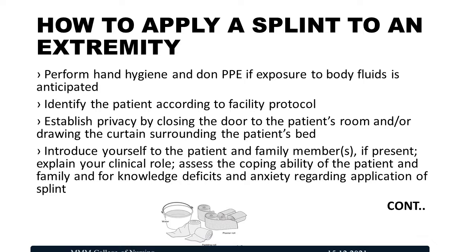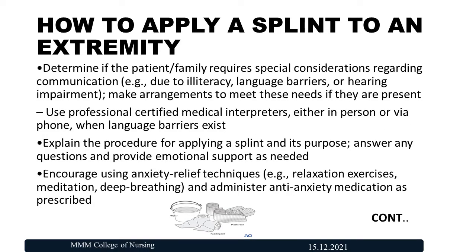How to apply the splint to an extremity: first, perform hand hygiene and don PPE if exposure to body fluid is anticipated. Second, identify the patient according to facility protocol. Establish privacy by closing the door to the patient's room. Introduce yourself to the patient and family members to improve coping ability, reduce anxiety, and improve knowledge. Determine if the patient and family members have special considerations regarding communication, literacy, language barriers, or hearing impairment, and make arrangements to meet those special needs. Explain the procedure and its purpose, and provide emotional support.